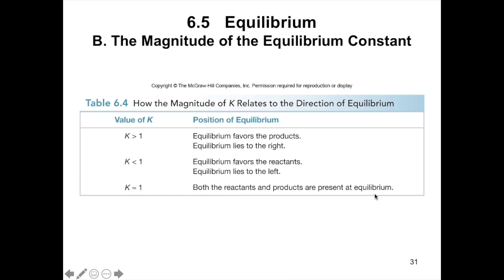Here is a table summarizing the magnitude of the equilibrium constant. When K is greater than 1, it favors the product. When K is less than 1, it favors the reactant. When K is almost equal to 1, both reactants and products are present at equilibrium.